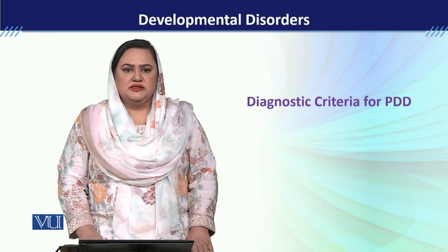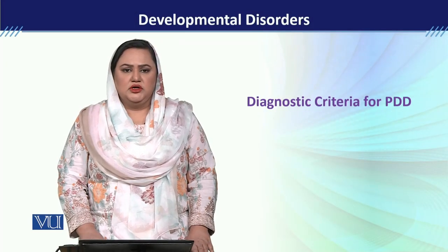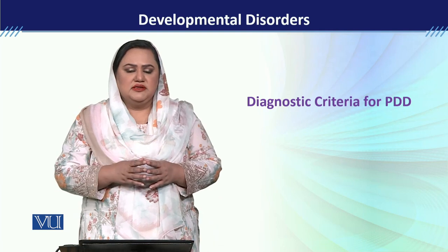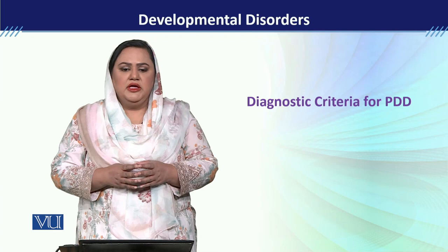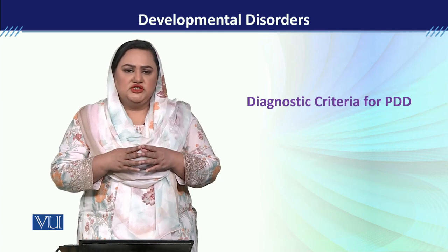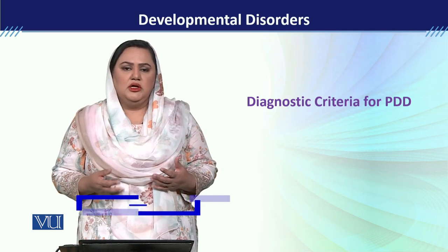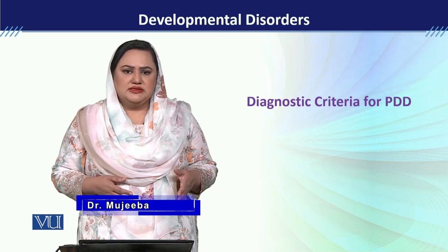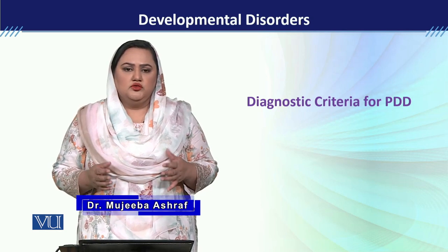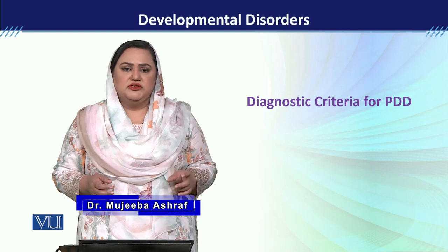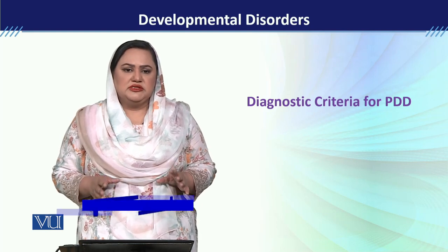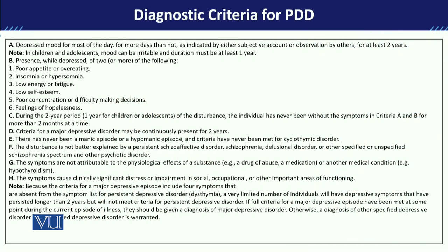We will now discuss the Diagnostic Criteria for Persistent Depressive Disorder according to DSM-5 — what symptoms a child must manifest for this diagnosis. We will study the DSM-5 criteria in reference to time and in reference to symptoms, starting with Criteria A.